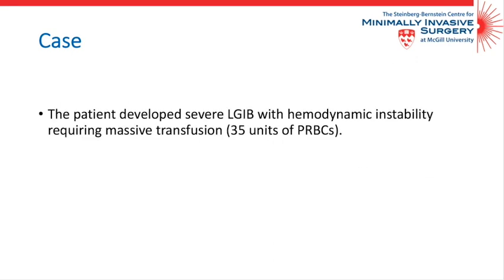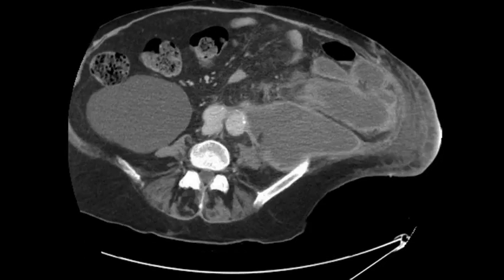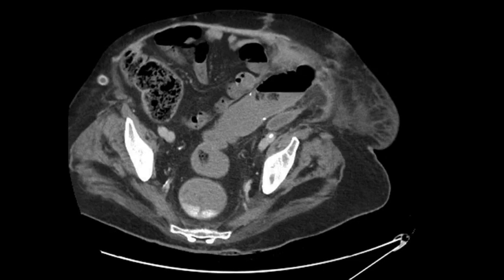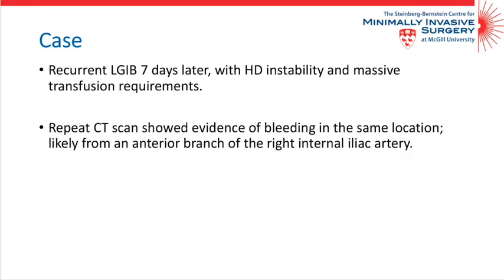During his admission, the patient developed lower gastrointestinal bleeding with hemodynamic instability requiring inotropic support and massive transfusion of approximately 35 units of packed red blood cells. A CT scan of the abdomen showed contrast extravasation and pooling in the mid-to-lower rectum indicating active bleeding. Endoscopic management was attempted in the ICU and revealed bleeding from a discrete artery in the lower rectum with normal surrounding mucosa, consistent with a Dieulafoy lesion. Bleeding was controlled with epinephrine injection and placement of three endoscopic clips.